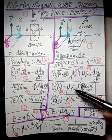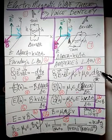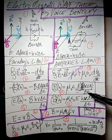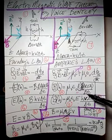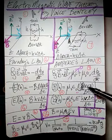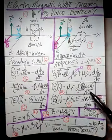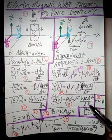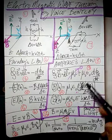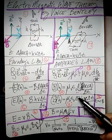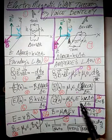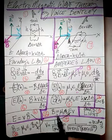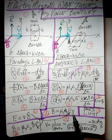So we have mu-naught times epsilon-naught times the derivative of the electric flux. The electric flux is E times the differential area over the differential time. The differential area is H·v·delta t, divided by delta t, giving H·v. So B·H = mu-naught·epsilon-naught·E·H·v, and with algebra: B = mu-naught·epsilon-naught·E·V.